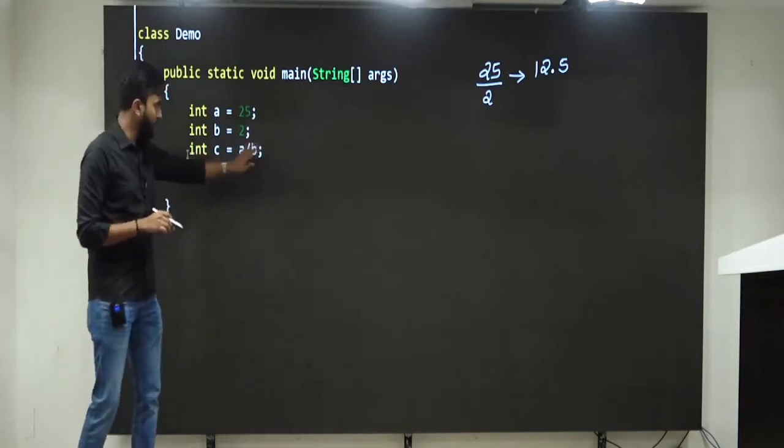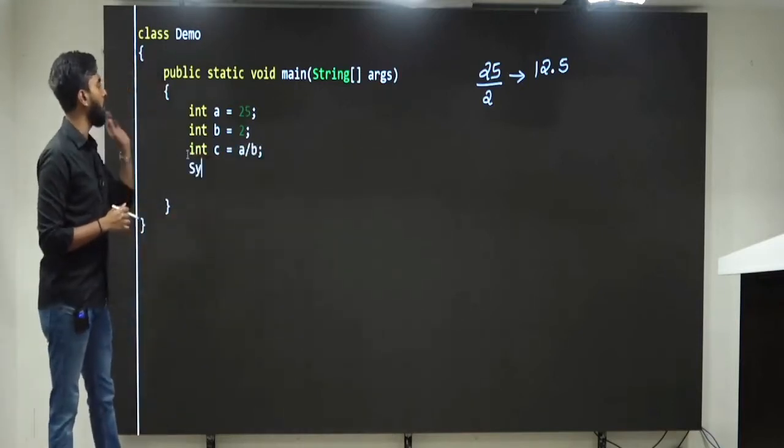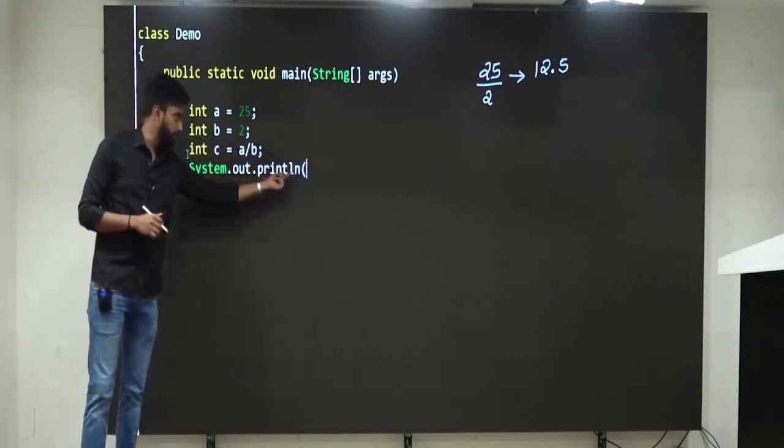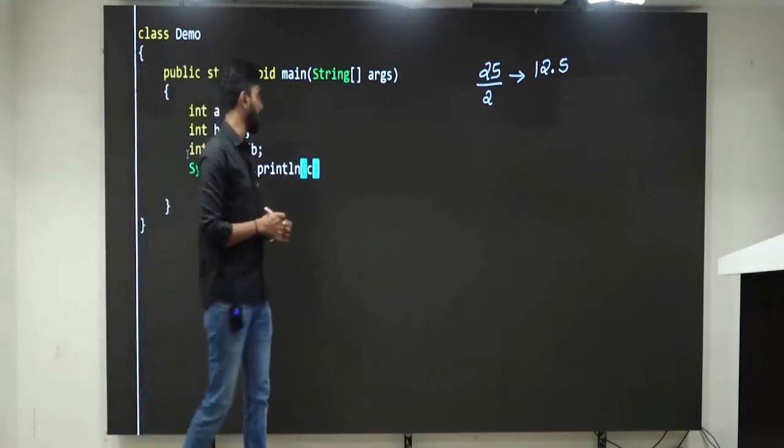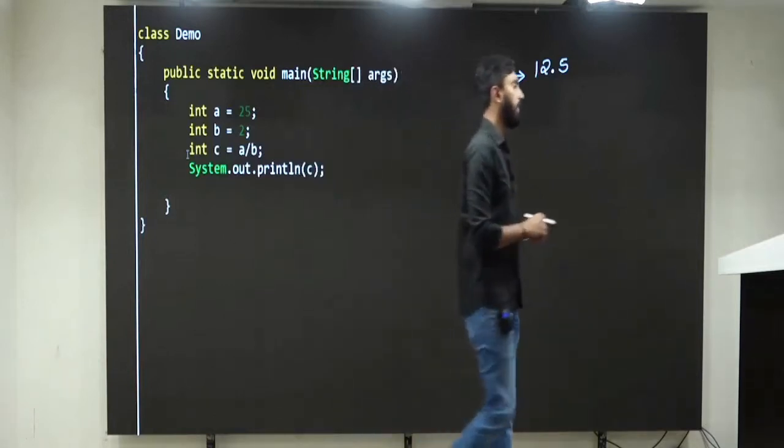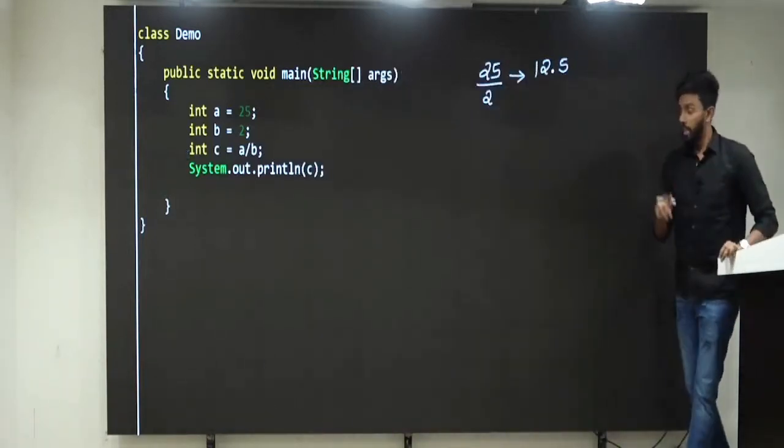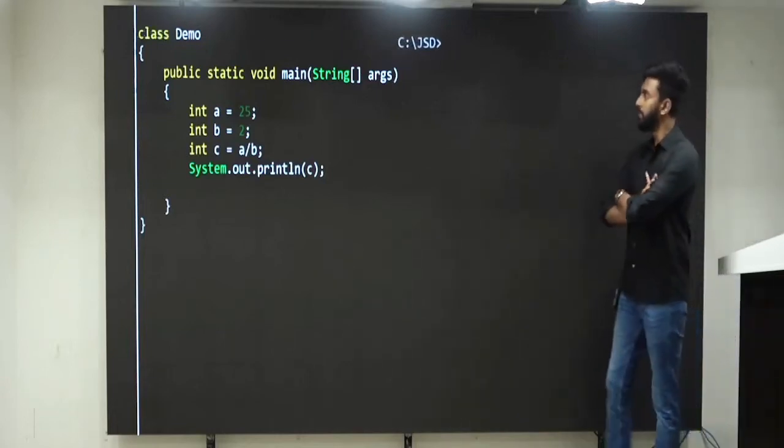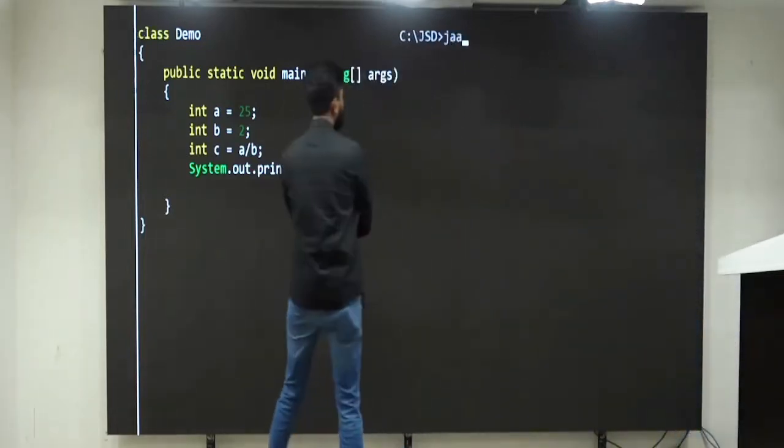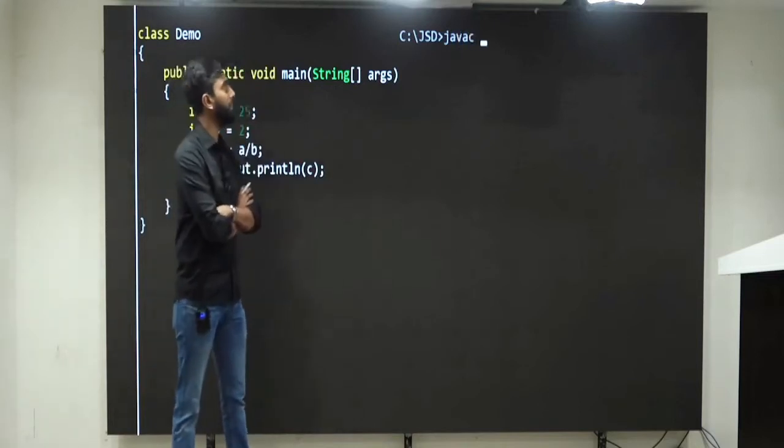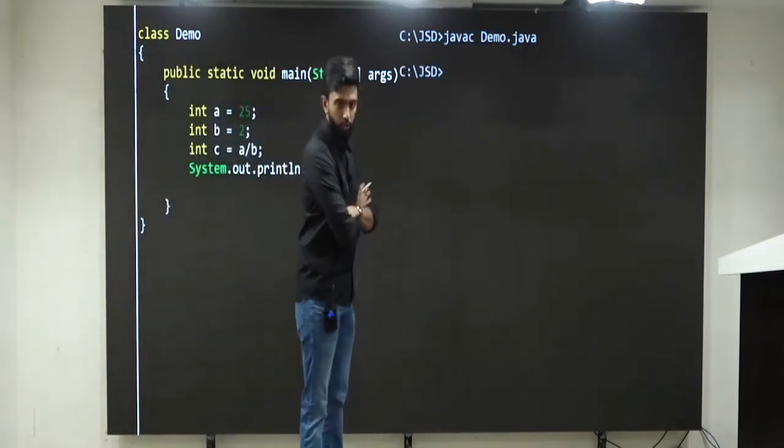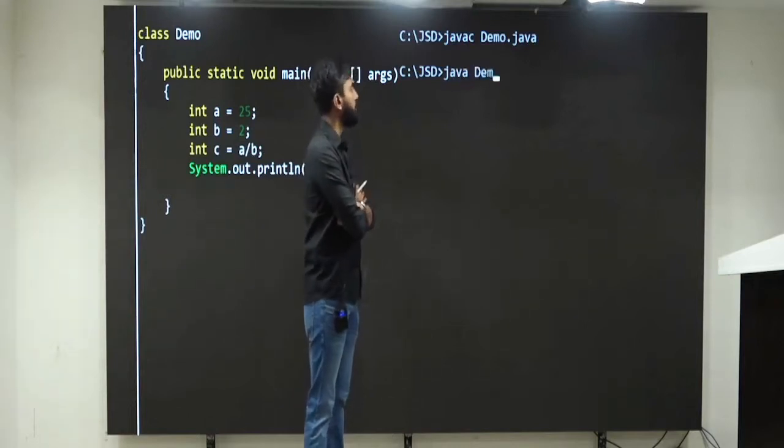Clear. Now in the next line, I will tell system dot out dot print ln and I will print the value of c. Now I want everyone to observe, if in case I just go and compile this program, I am just compiling it. If I compile my program, really there is no issues. If I execute it, observe,